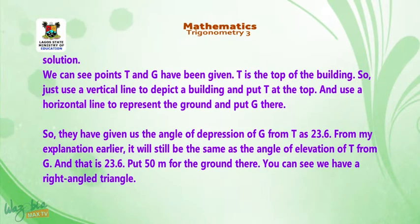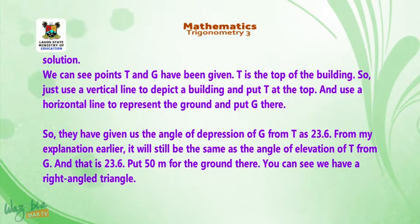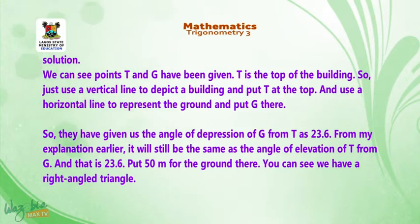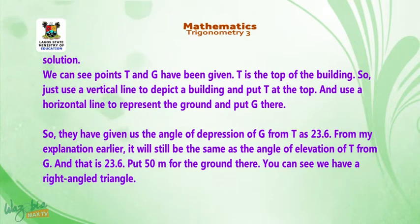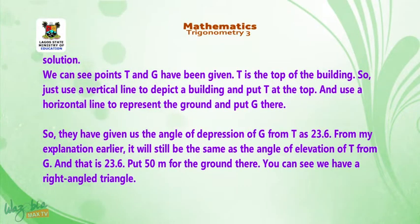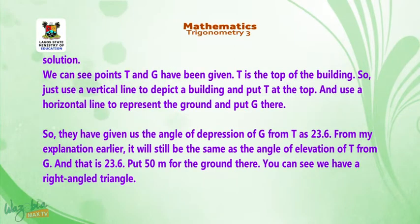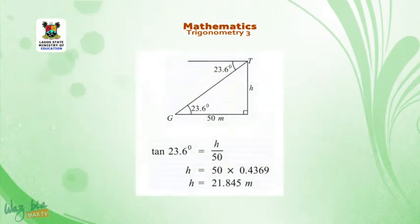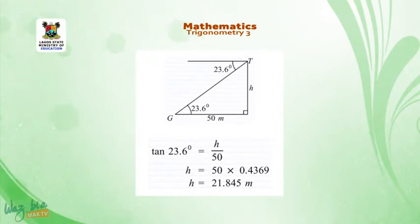Points T and G have been given. Use a vertical line to depict the building and put T at the top, and use a horizontal line to represent the ground and put G there. They have given us the angle of depression of G from T as 23.6 degrees. From the earlier explanation, this is the same as the angle of elevation of T from G, which is 23.6 degrees. Put 50 meters for the ground. We have a right-angled triangle, so tan 23.6° = H/50.